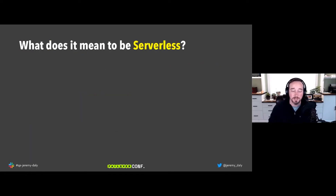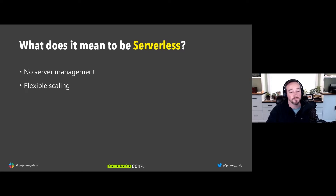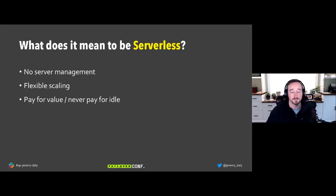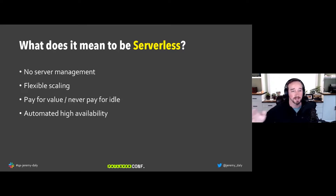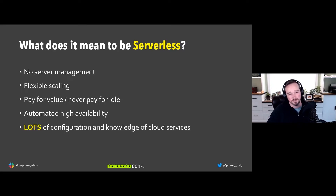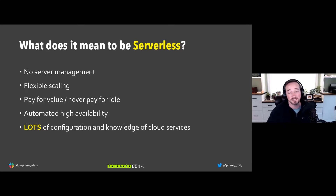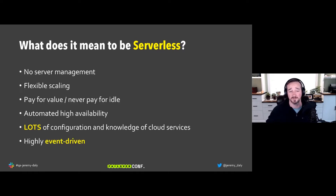What does it mean to be serverless? There's no server management — AWS, Google, or Azure handles that for you. It's very flexible when it comes to scaling. You only pay for execution. There's built-in automated high availability — if one server goes down, AWS will route to a different function for you. It also requires a lot of configuration, deep knowledge of cloud services, and is highly event-driven.